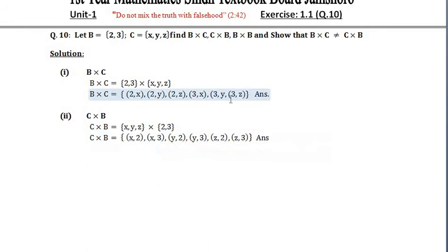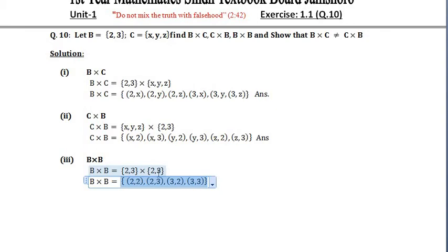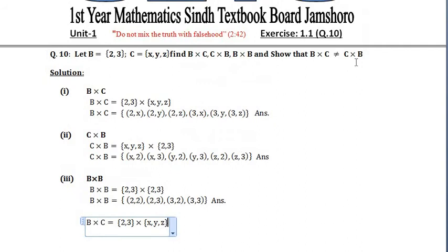Similarly, you can see that the answer of B cross B equals {(2,2), (2,3), (3,2), (3,3)}.